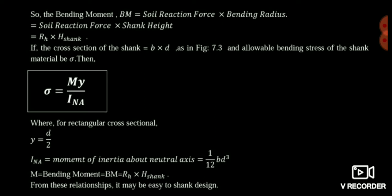As you have studied in engineering mechanics, the moment of inertia of a rectangular body is simply (1/12) × B × D³, where B is the thickness of the rectangular body and D is the depth of the rectangular body.